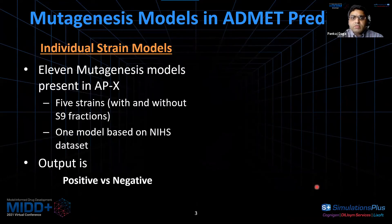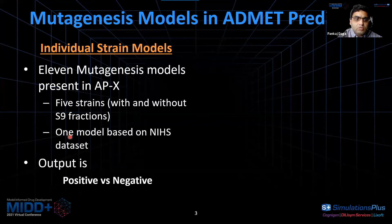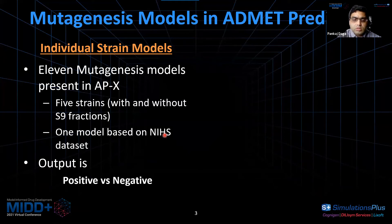We have included a total of 11 individual models in ADMET Predictor. Specifically, 10 models are from those five strains defined in the OECD guidelines — five strains with and without S9 fractions. One model was built using an IHS dataset provided to us by IHS Japan, who compiled a list of 12,000 chemicals from across industries along with their mutagenesis potential. The output in all 11 models is positive versus negative.